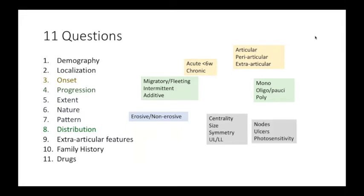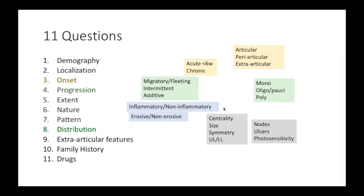We also try to figure out whether there are any extra-articular features such as the presence of nodes, involvement of skin in terms of ulcers or mucosa in terms of ulcers, photosensitivity, and other extra-articular features. We also determine whether the person has an inflammatory arthritis or a non-inflammatory arthritis, and we try to figure out the family history and the drug exposure of the patient.